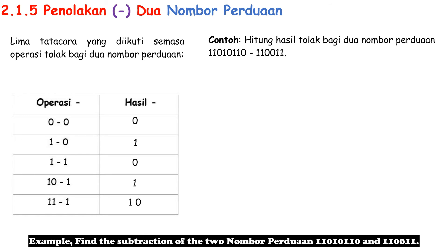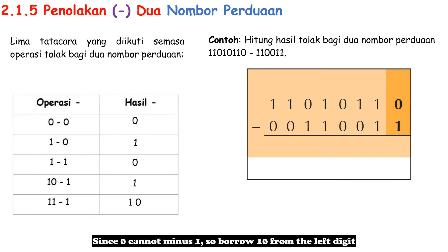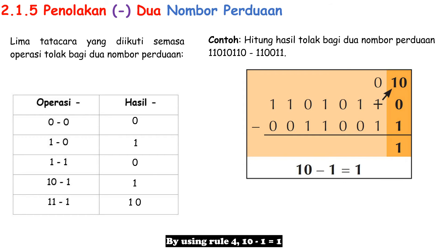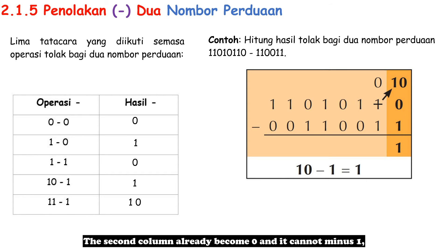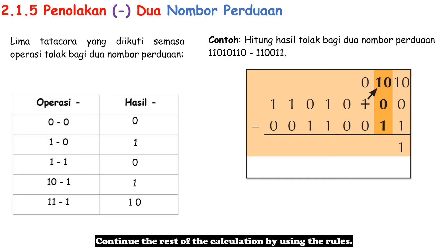Example: find the subtraction of two Nombor Perduaan: 1101010 minus 110011. Since 0 cannot minus 1, borrow 10 from the left digit, and the left digit becomes 0. By using Rule 4: 10 − 1 = 1. The second column already became 0 and cannot minus 1 — again, borrow from the left digit. Continue the rest of the calculation using the rules.